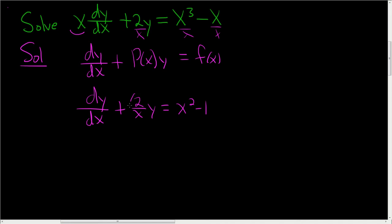At this point, you'll notice that p(x) is right there. It's 2 over x. So you compute what's called your integrating factor. That's μ(x). So this is equal to e to the integral of p(x) with respect to x.